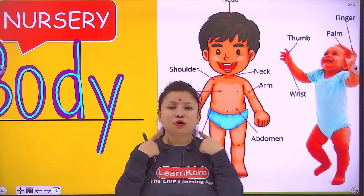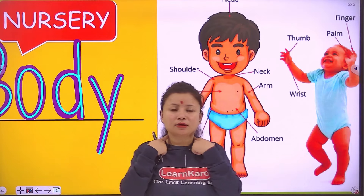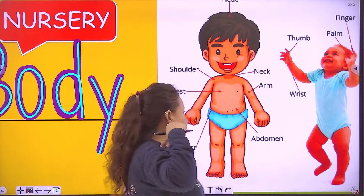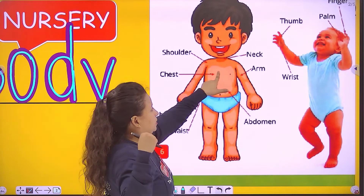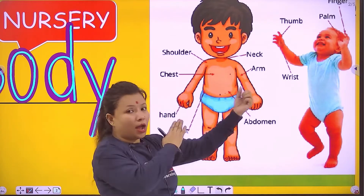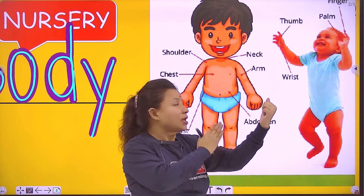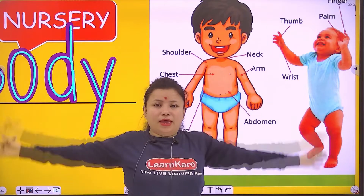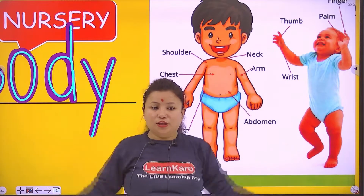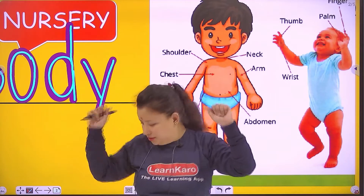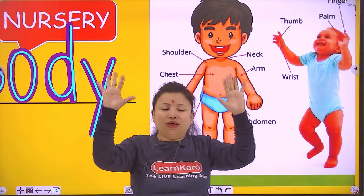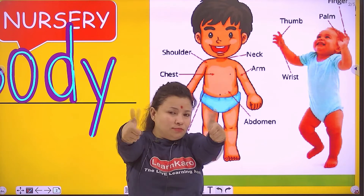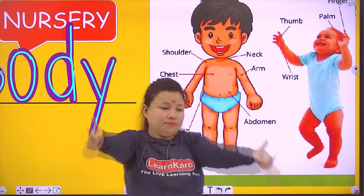Neck. Show me your neck. Neck. Shoulders. Shoulders. Chest. Arm. Arm. Hand. Hand. Fingers. Fingers. Thumb. Show me your thumb. Thumb.